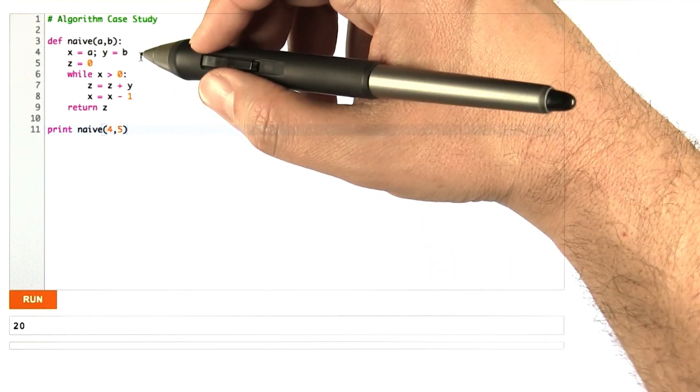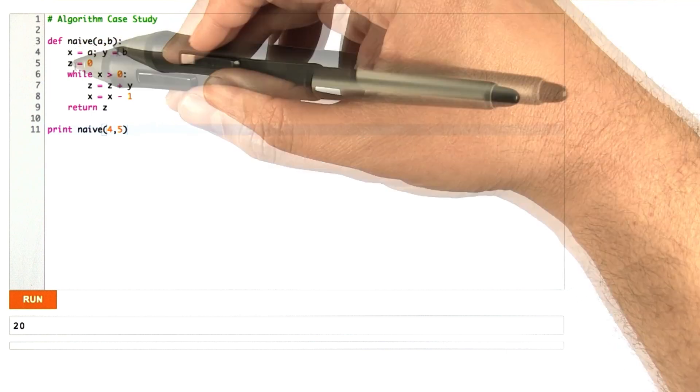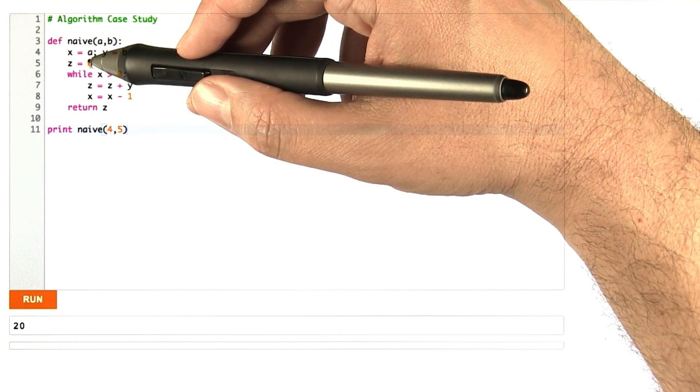So let's actually take a look at the code and see what happens. We start off with a and b. We leave them alone, but we put copies of them into x and y. And we have a z variable that we initialized to 0.